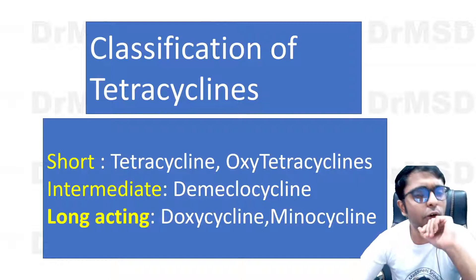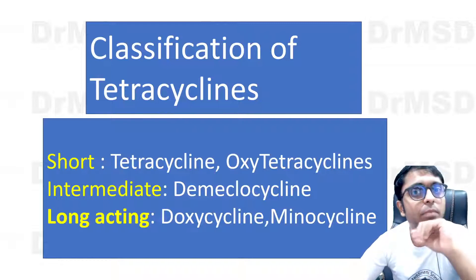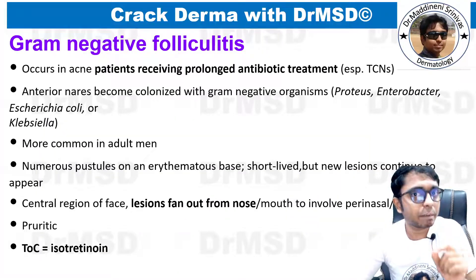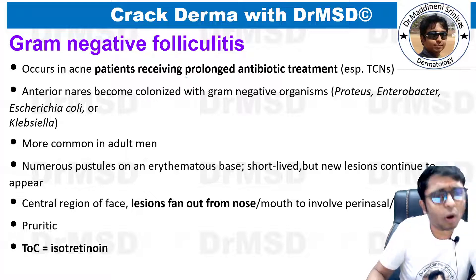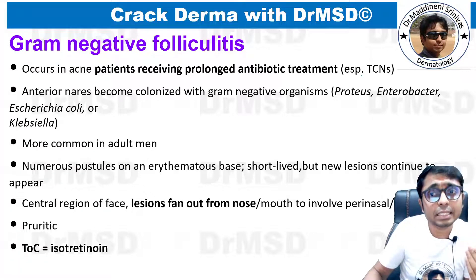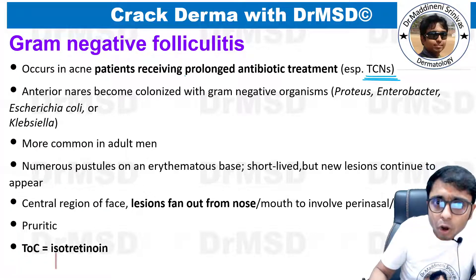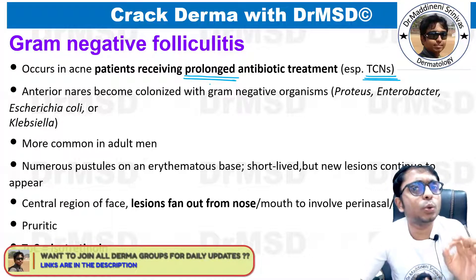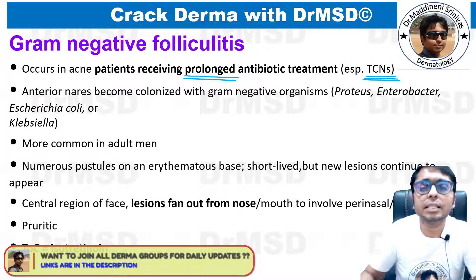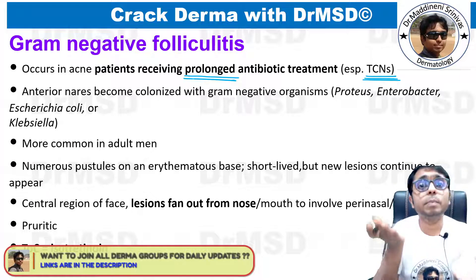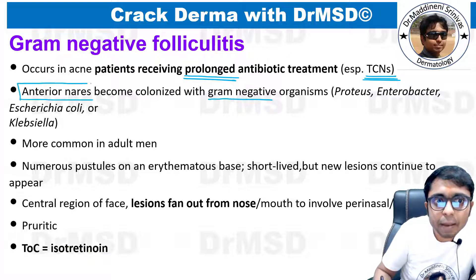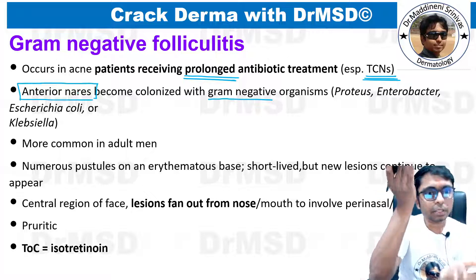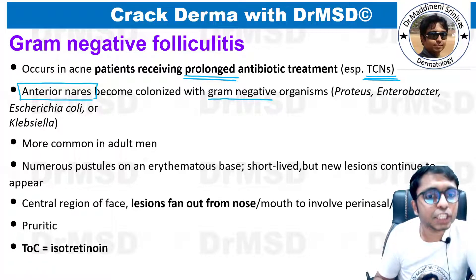There is a problem with long-term usage of tetracycline in acne patients. If patients are receiving tetracycline group of medications for a prolonged period of time, these drugs are going to target and kill the gram-positive organisms. What will happen is there is going to be an imbalance between gram-positive and gram-negative organism colonization, because of which in the anterior nares — that is in the nostrils — the gram-negative organisms will become more and more in number.